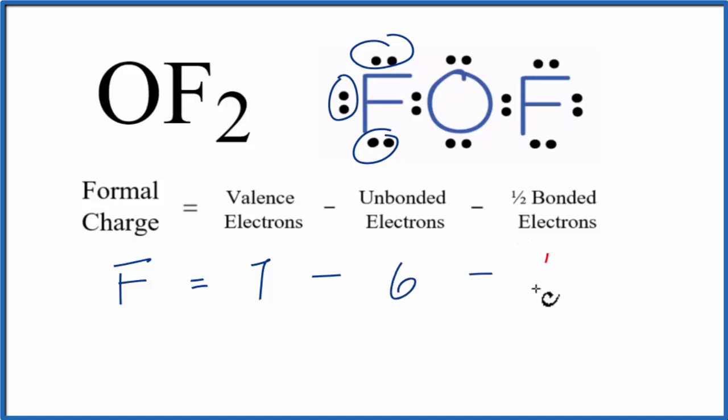Finally, we'll subtract one half of the bonded valence electrons. These are the valence electrons between atoms right here. So we have 2 of those. So 7 minus 6 is 1, minus 1, that equals 0.